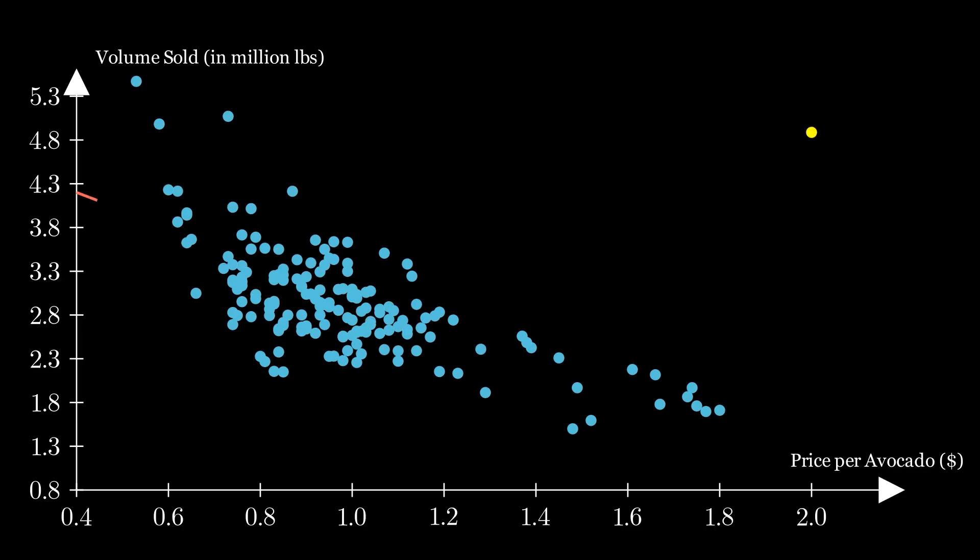With our current data, we could create lines in order to predict how many avocados would be sold at $2. But what exactly would the line look like? You could reasonably say it could be any of these lines that I'm showing right now. So how do we know which line is best?